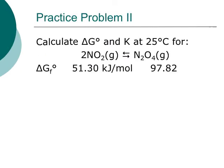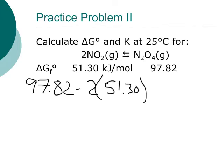Let's take a specific example. Calculate the delta G° and K for the reaction involving nitrogen dioxide forming dinitrogen tetraoxide, given the free energy of formation values. We've got the free energies of formation, so all I have to do is a products minus reactants calculation. That's going to be 97.82 minus 2 times 51.30, and we get an answer of negative 4.78 kilojoules. A negative free energy change tells us that this reaction is spontaneous under standard state conditions.